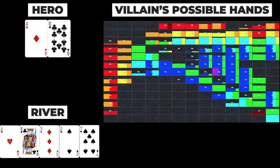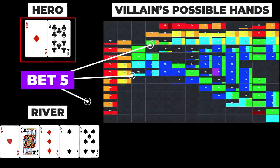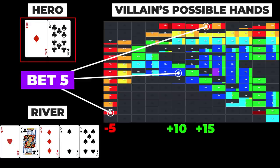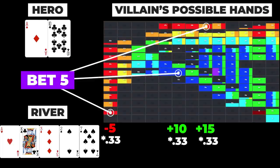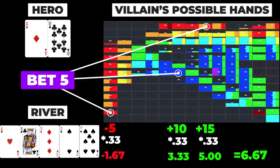You often hear that the ultimate goal for each and every decision in poker should be to maximize EV. But what does this actually mean? Technically, the EV for taking a particular action with a particular hand is calculated by determining the number of chips won or lost against all possible hands in villain's range across all possible counter strategies and board runouts. Each of these outcomes is then multiplied by the probability the outcome will occur, and all the products are then summed up. The end result is the EV of taking the action.